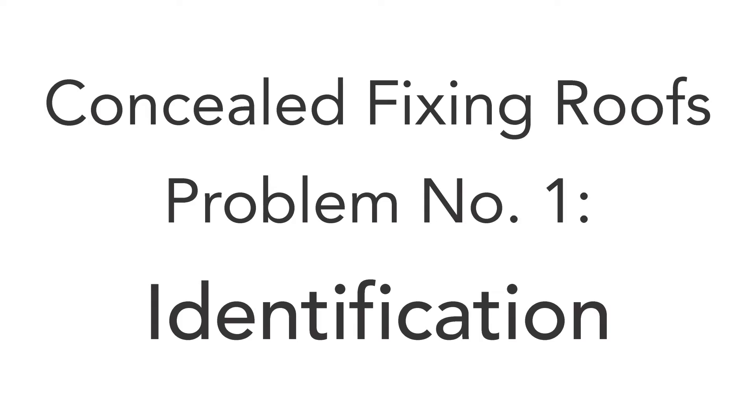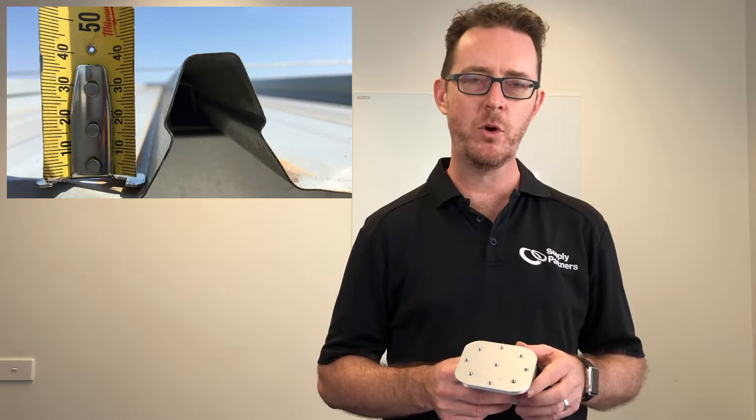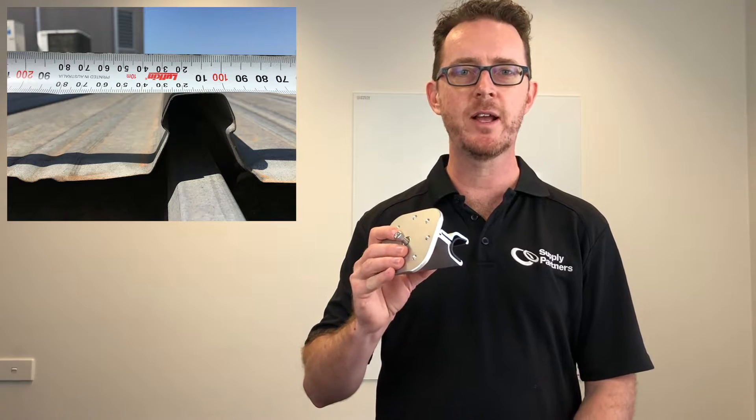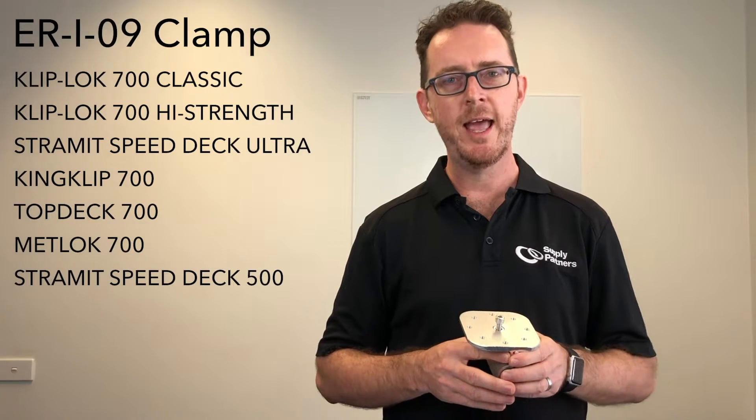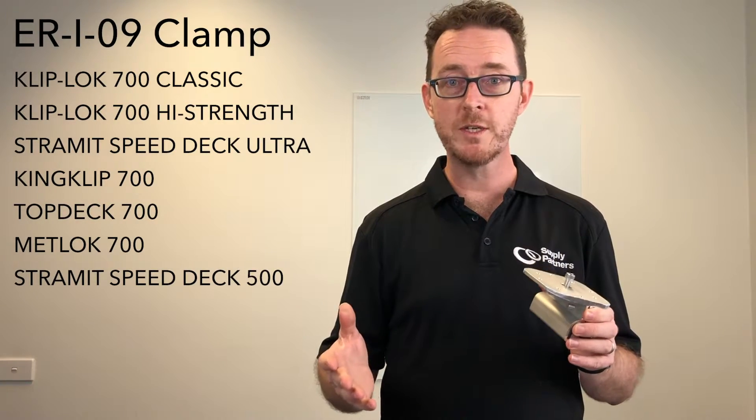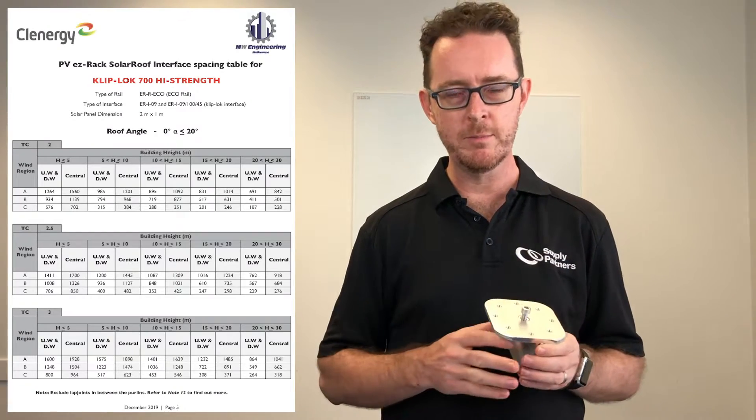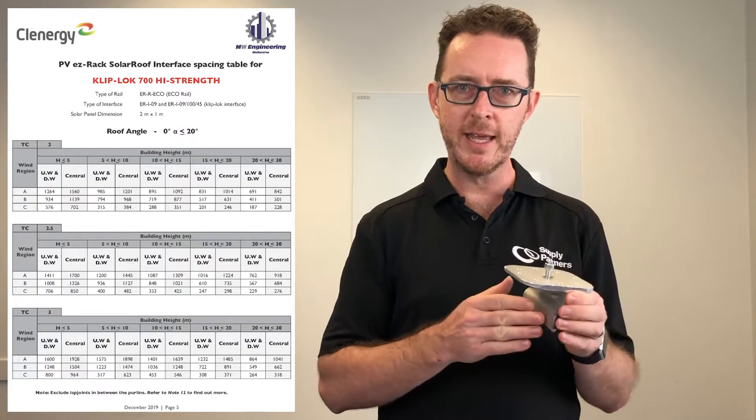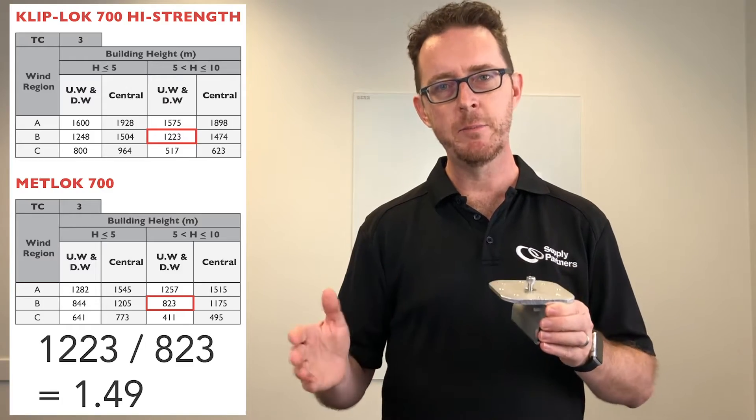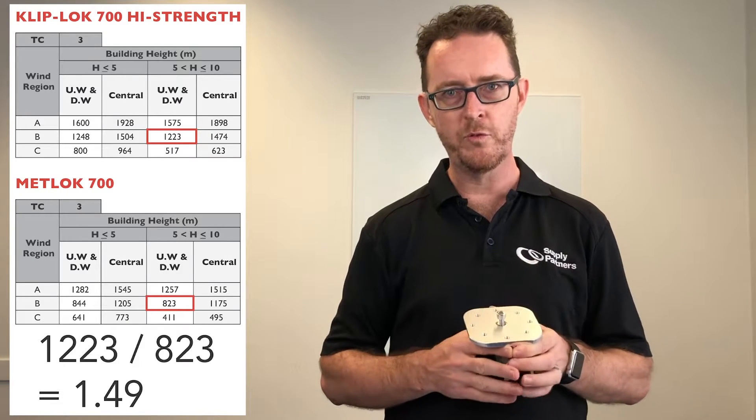So what is the problem with Cliplock Roofs? There are two things actually. The number one problem with Cliplock Roofs is that it's difficult to identify what particular profile a Cliplock Roof is. This larger of the clamps is actually used on seven different roof profiles. And so they all look similar, but the engineering between them can be quite different. And the number of clamps you need in a given area can be quite different as well, depending on the roof profile.